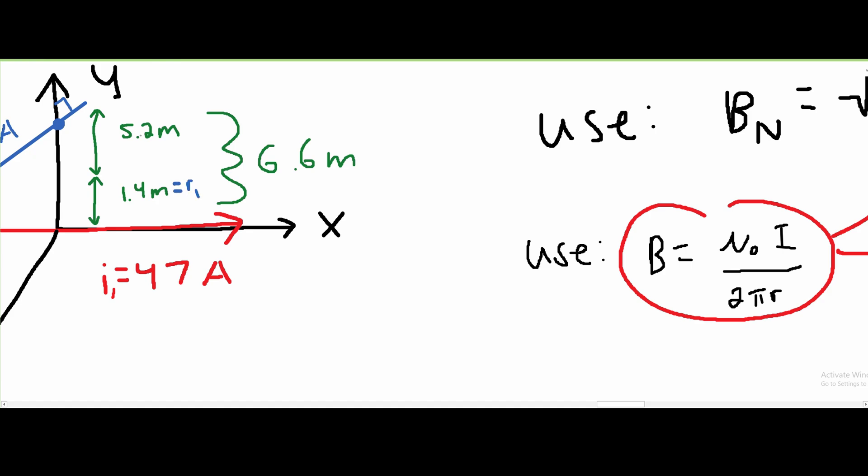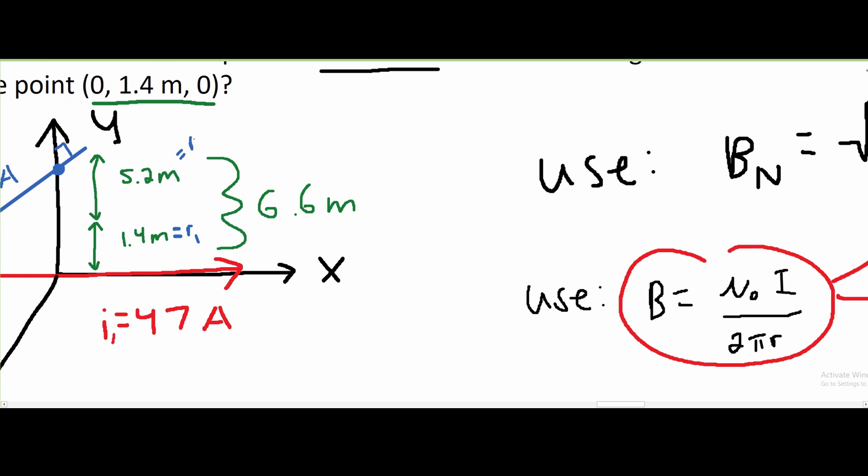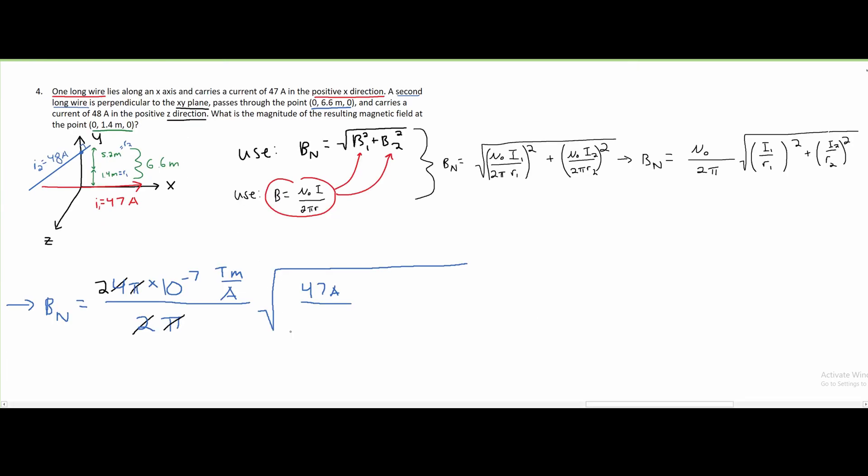And the 5.2 meters is going to be associated with R2. Now that we know this, we can fill in our R1 to be 1.4 meters, and this is squared, plus our other current, which is 48 amps over 5.2 meters. And this is also squared.